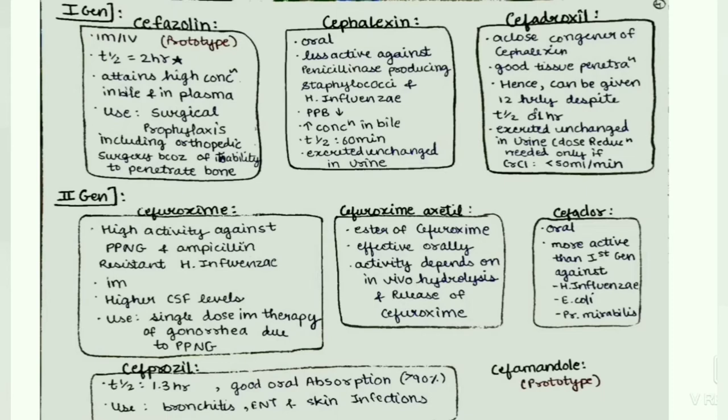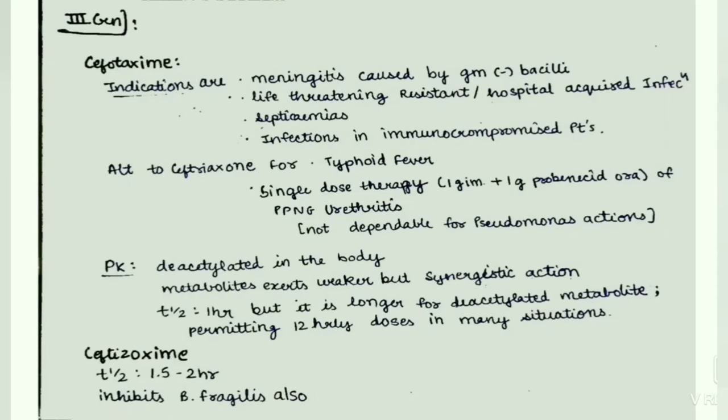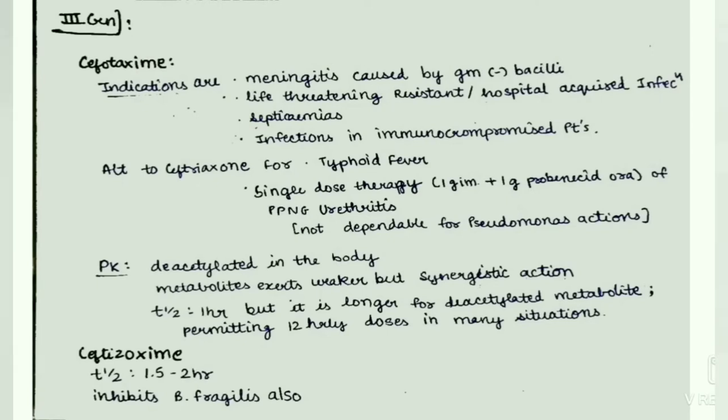Cefamandole is the prototype type 1. Now from the third generation cephalosporins — cefotaxime. Indications are meningitis caused by gram-negative bacilli, life-threatening resistant or hospital-acquired infections, septicemias, and infections in immunocompromised patients. It is given as an alternative to ceftriaxone for typhoid fever and as single-dose therapy of PPNG urethritis. It is not reliable for Pseudomonas infections.